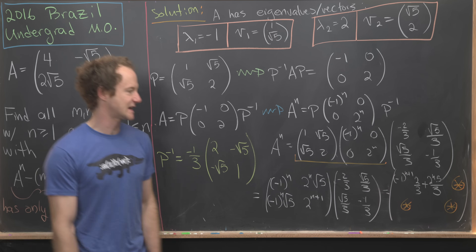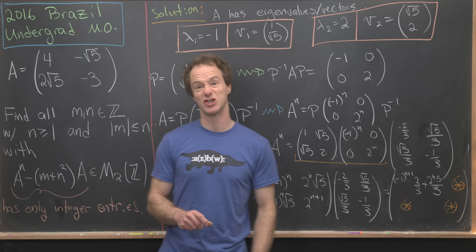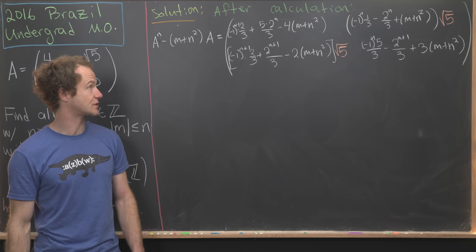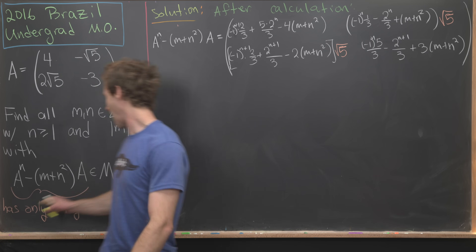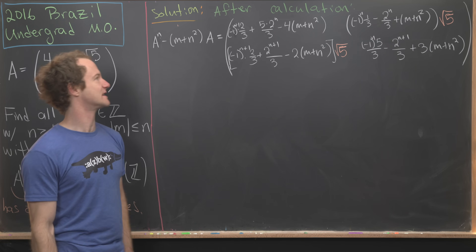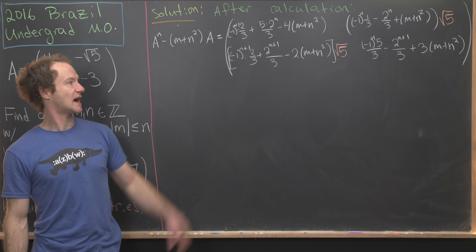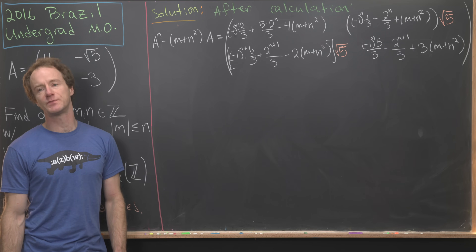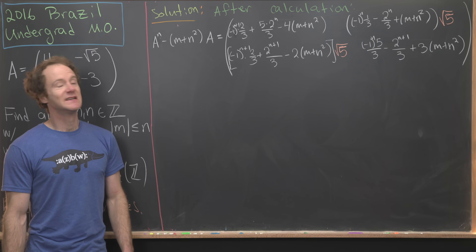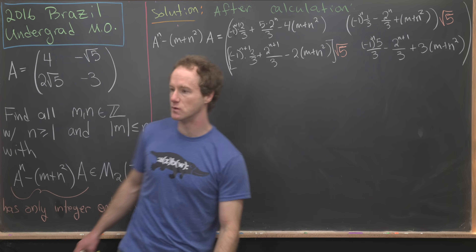After completing the full matrix multiplication off-screen, the expression Aⁿ − (m + n²)·A takes a specific form. The diagonal entries are rational, but the off-diagonal entries are multiples of √5. For the result to lie in M₂(ℤ), the coefficients of √5 in the off-diagonal entries must equal zero.